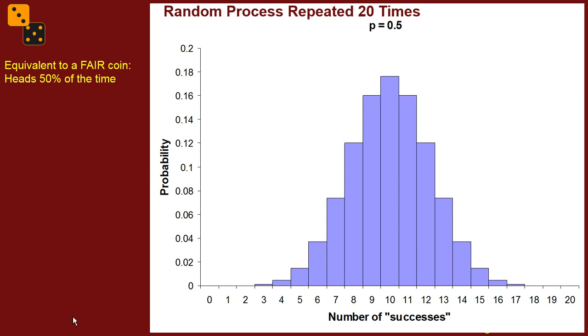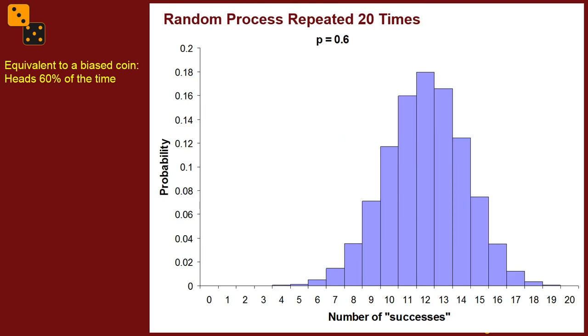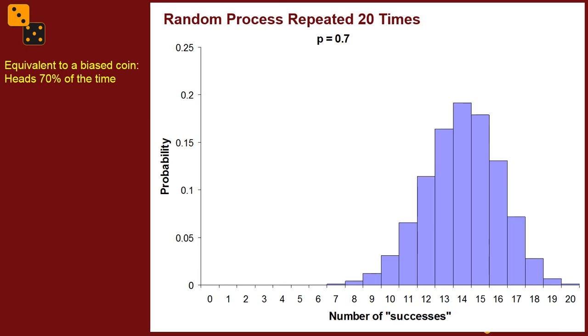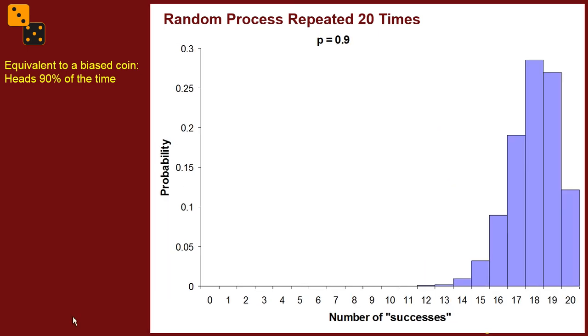But let's keep making the coin more and more biased towards heads. Now this is a 60% probability heads. It's getting skewed, right? It's negatively skewed, 70%, 80%, and 90%. And we'll end there for now.